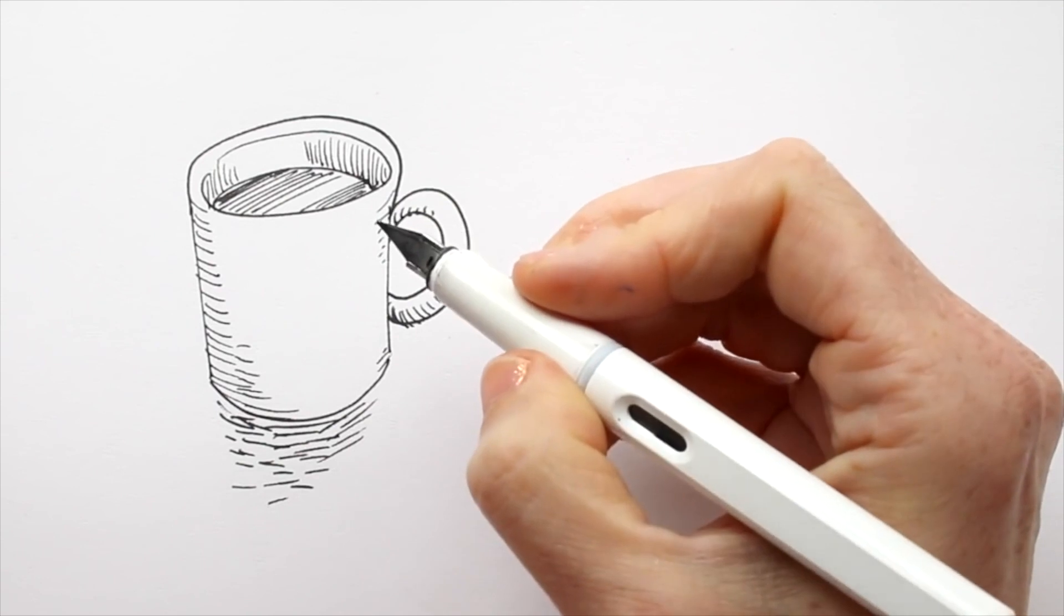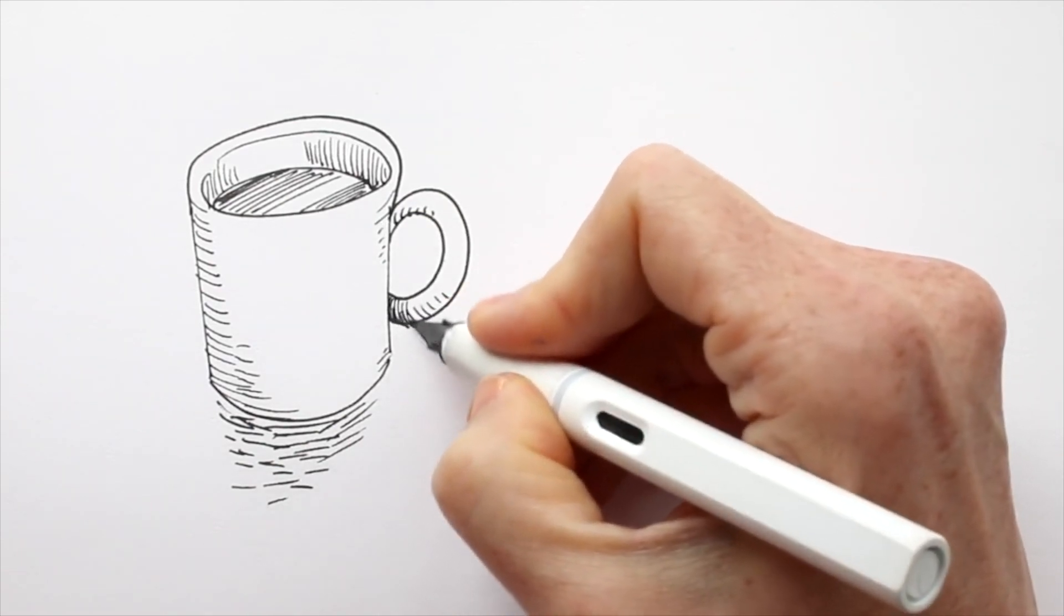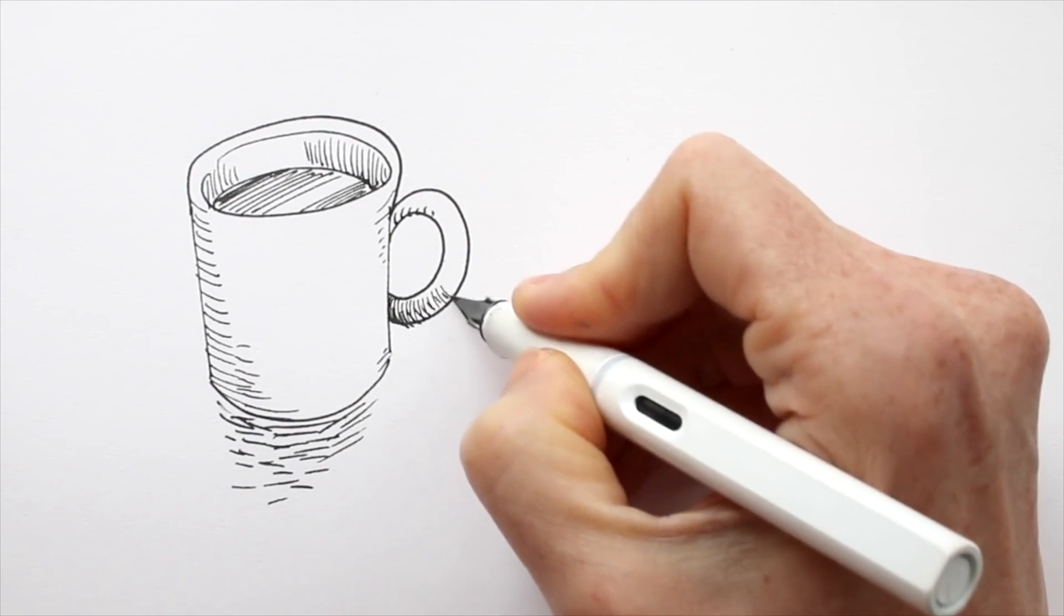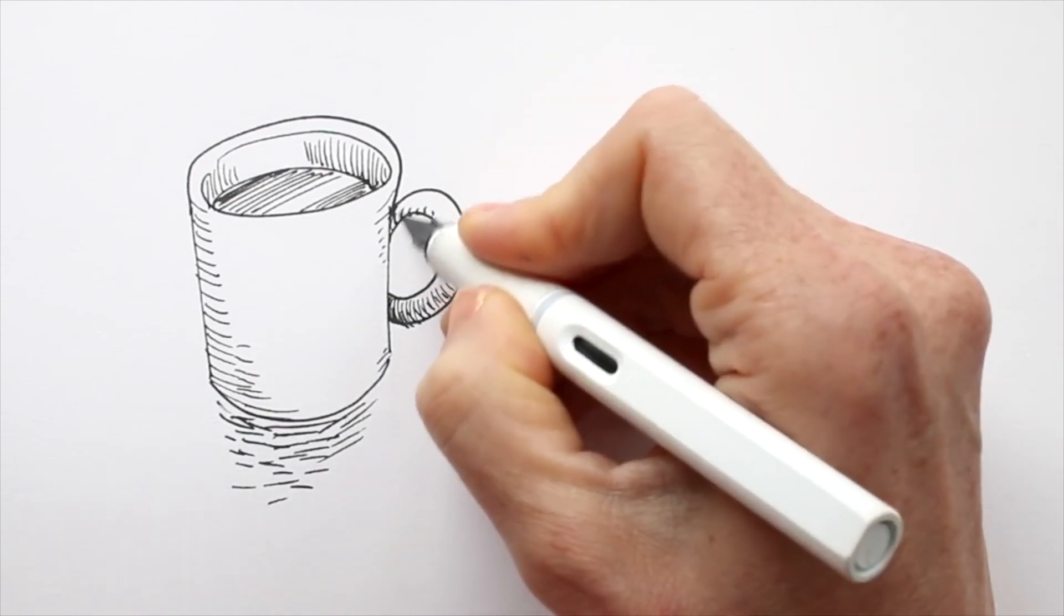But what if you turn your pen and use the other side of its nib? Now you can use an extra fine, thin line.